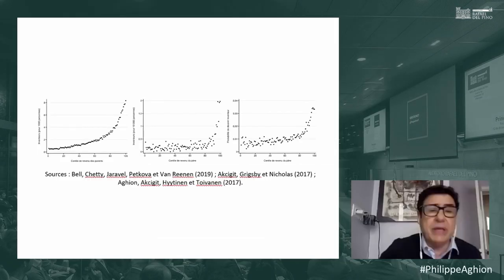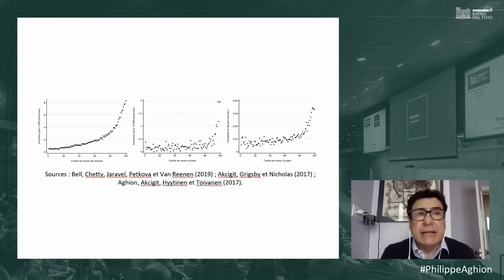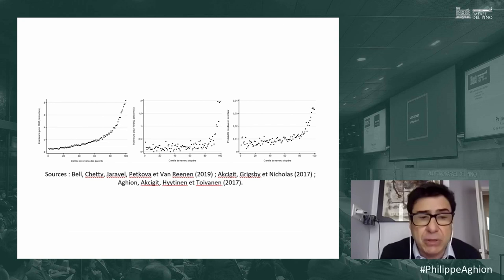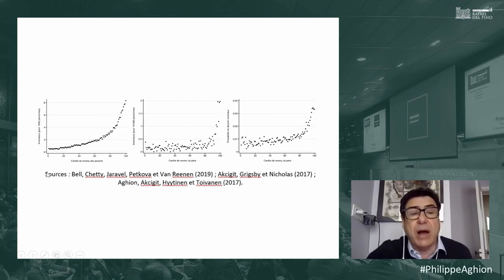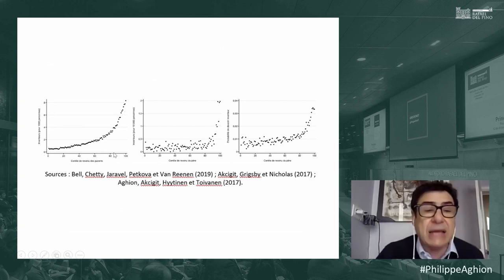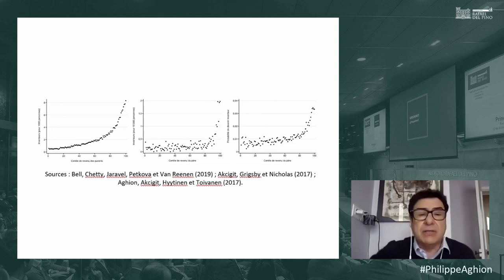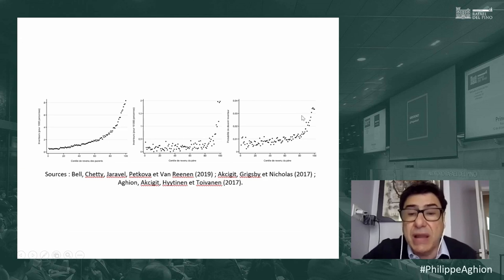Education is another policy. Looking at the relationship between parental income and the probability of inventing in the US and Finland, you always get a J-curve: children of low-income parents have very low probability of inventing, while children of high-income parents are much more likely to innovate. Finland has a free, high-quality education system with very good PISA test scores — yet you still see this J-curve.